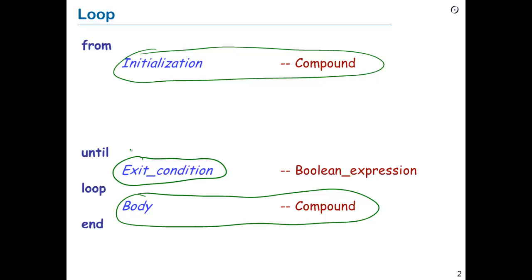What does this mean precisely? Do we always execute the initialization? Yes. Do we always execute the body? No. The loop execution is the execution of the initialization, followed by zero or more executions of the body, stopping as soon as the exit condition is satisfied. So if we do the initialization and the exit condition is immediately satisfied, then we stop — the body will not have been executed. This is a bit abstract at the moment; examples are coming.